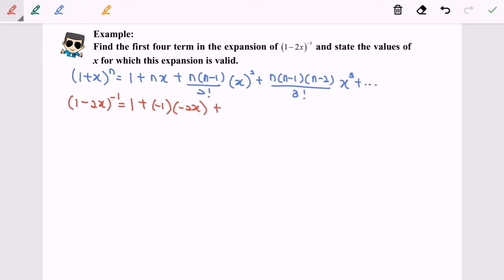Proceed. N will be equal to negative 1, multiply with negative 2 over 2 factorial, times (-2x) to the power of 2. The final term will be (-1)(-2)(-3) over 3 factorial times (-2x) to the power of 3.